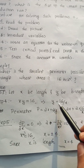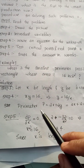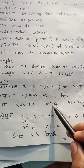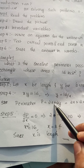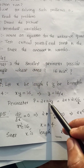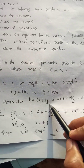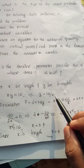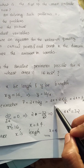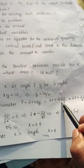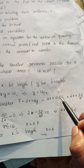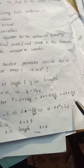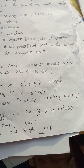So y equals 16 divided by x. The perimeter equation is: perimeter equals 2 times (x plus y), which gives 2x plus 2y. Substituting y equals 16 over x, the perimeter in one variable becomes 2x plus 32 over x.